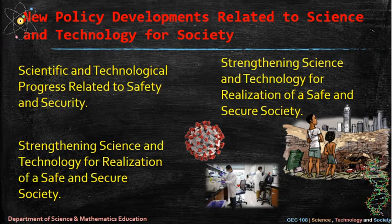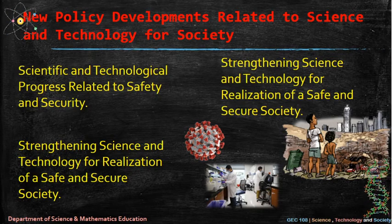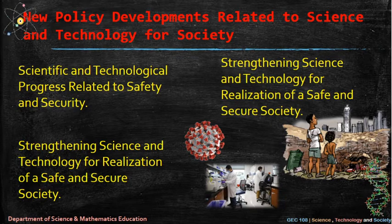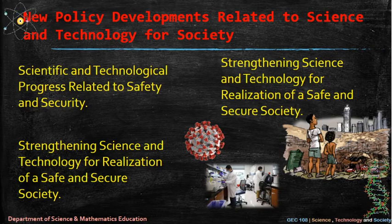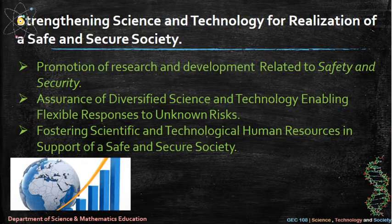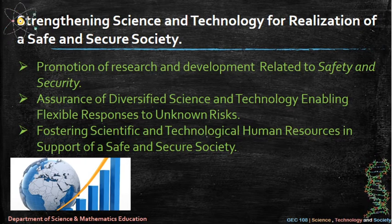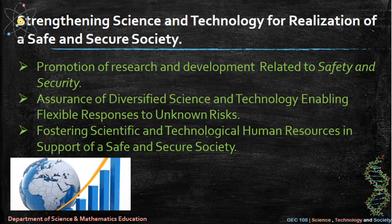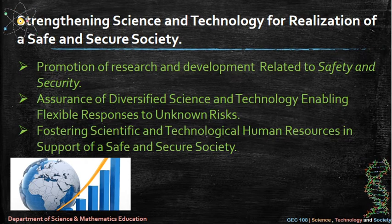New policy developments related to science and technology for society include: one, scientific and technological progress related to safety and security; two, strengthening science and technology for realization of a safe and secure society; three, promotion of research and development related to safety and security; four, assurance of diversified science and technology enabling flexible responses to unknown risks; and five, fostering scientific and technological human resources in support of a safe and secure society.